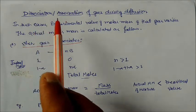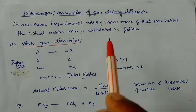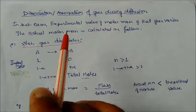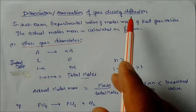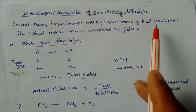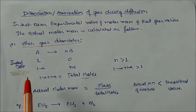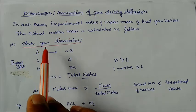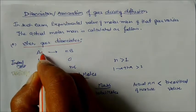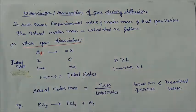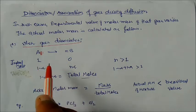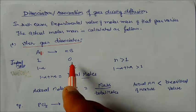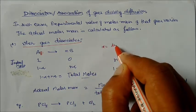Let us see this problem: the dissociation and association of gas during diffusion. Gas can dissociate or associate in the diffusion process. In that case, the experimental molar mass of that gas changes. Let us take one case when gas dissociates. One mole of gas A dissociates to give n molecules of B. Initially we have 1 mole of A and 0 moles of B. After dissociation at equilibrium, the moles of B become n times alpha, where alpha is the degree of dissociation.